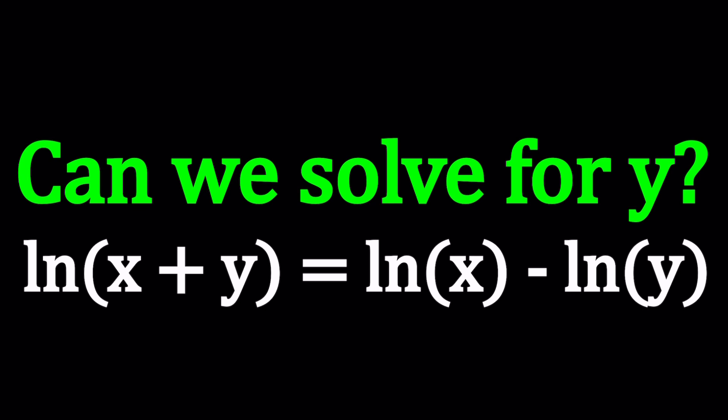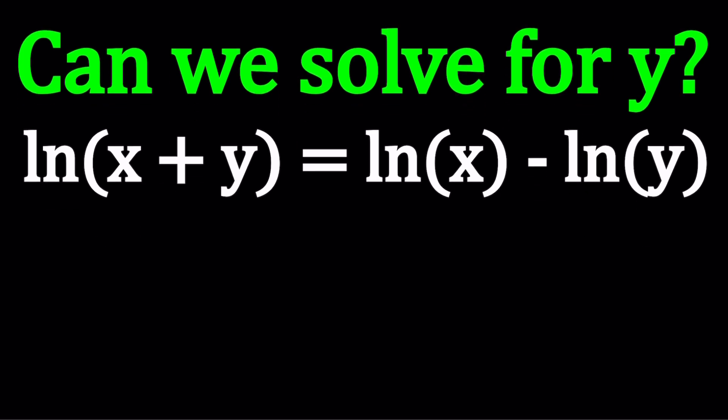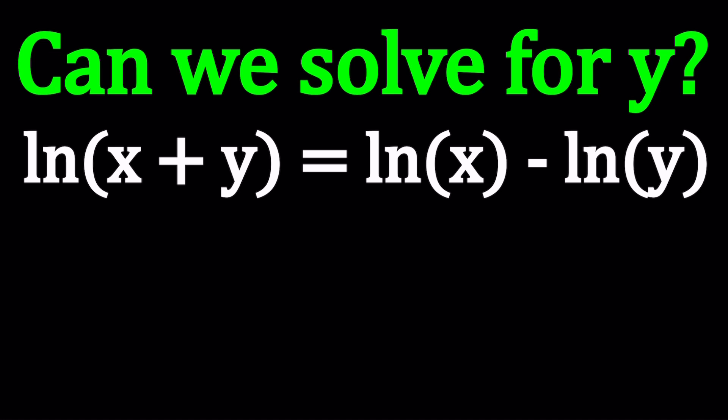If you're ready, let's go. So we're going to take a look at an equation where we have ln's on both sides. But the thing is, we don't have an identity for this. Why? Because we don't have the ln of a sum. We have the ln of a product, we have the ln of a quotient, so multiplication and division, but not sum. But what about this equation? Is this false then? No. Because we're going to be solving for y.